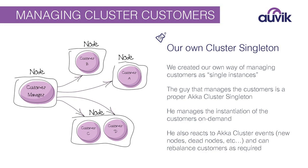The customer manager also reacts to ACA cluster events — knowing when nodes come up, go down, join, or die. When a customer dies, it can try to rebalance and put it somewhere else. Using the 'let it crash' philosophy is easily applied here: when we want to rebalance, we just let the customer die, and when it comes back up it gets reinitialized properly. For customer manager failover, we rely simply on the ACA cluster singleton pattern.